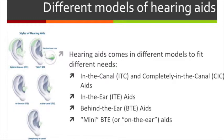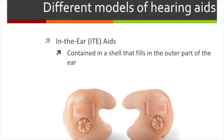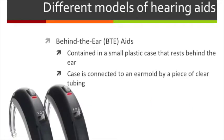There are several models of hearing aids in the market. There are in-the-canal aids, completely-in-the-canal aids, in-the-ear aids, and behind-the-ear aids, and now also a mini behind-the-ear model which is much smaller than traditional behind-the-ear aids. In-the-canal and completely-in-the-canal aids are contained in a tiny case that fits partly or completely into the ear canal — the smallest aids available, offering cosmetic and listening advantages. In-the-ear aids have all parts contained in a shell fitting into the outer part of the ear, and are larger and easier to handle for some people. Behind-the-ear aids are contained in a small plastic case resting behind the ear, connected to an ear mold by clear tubing, and are often chosen for young children for safety and growth reasons.